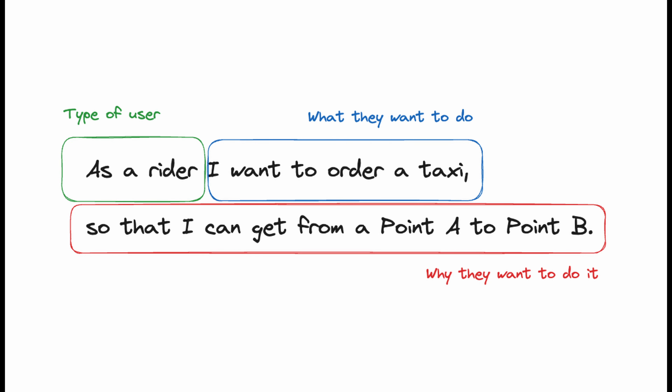We decided we want to iterate in very small portions, and requirements transformed from long documents into short stories describing what we want to bring as value to our users. A typical user story would look like this: as a rider, I want to order a taxi so that I can get from point A to point B. This is the description of the user story in short form.